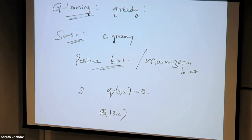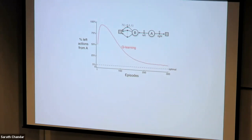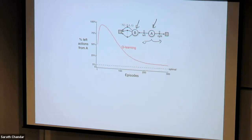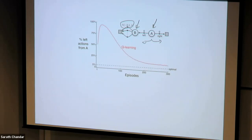Here is a practical example — a very simple two-state world with only two states, A and B. At A, you can either go left or right. If you go right, you get a reward of zero and terminate. If you go left, you reach state B. From state B, all your actions take you to terminal with a reward drawn from a normal distribution centered at minus 0.1.